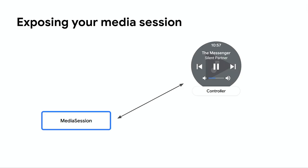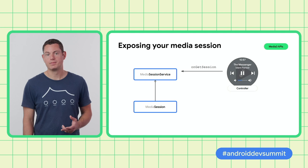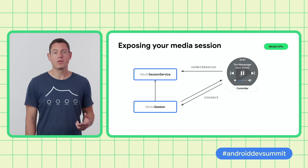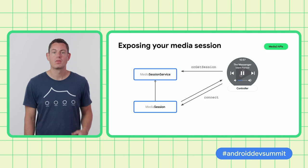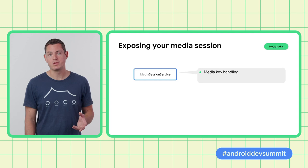By providing access to your media session, you can allow other apps and devices to control playback, which can be much more convenient for users compared to using your app's UI. To do this in Media 3, use a media session service. This indicates that your app can create a media session. All you then need to do is override the onGetSession method to return your media session to the controller. The controller can then connect to your media session and start controlling playback through it. As well as being simpler than media browser service, there are several other benefits including automatic handling of media key events, for example with a Bluetooth headset, and providing a default media notification.